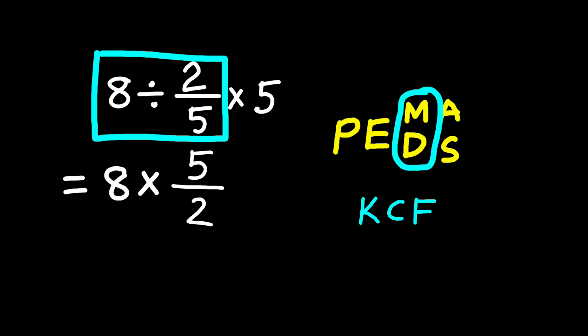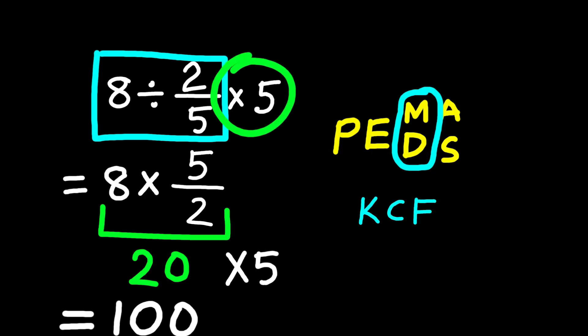That gives us 40 over 2, which equals 20. Nice and clean. Moving on to the next point, we still have to multiply by that last 5. So 20 times 5 equals 100, and that's our final answer. The correct solution is 100, not 4.